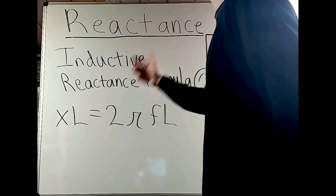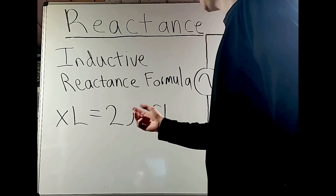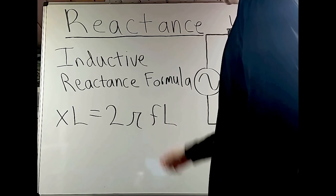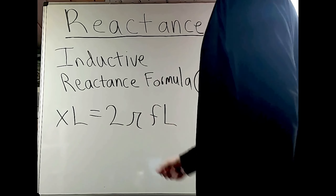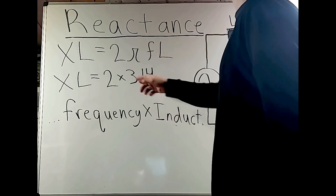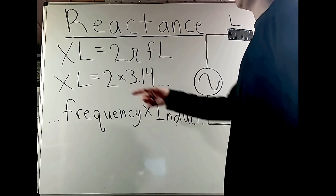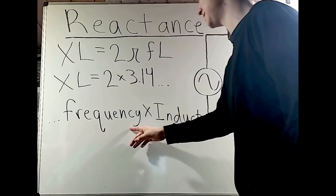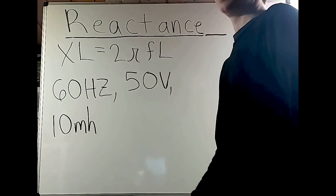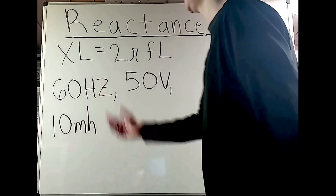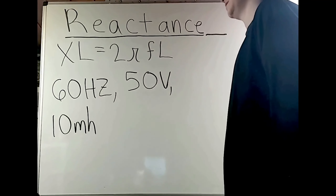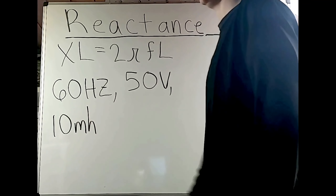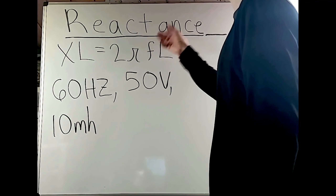The formula for inductive reactance is 2π × frequency × inductance — all multiplied together. Pi is 3.14, so it's simply 2 × 3.14 × frequency × inductance. For example, if we have a circuit rated at 60 hertz, 50 volts, and 10 millihenries, what is the inductive reactance?